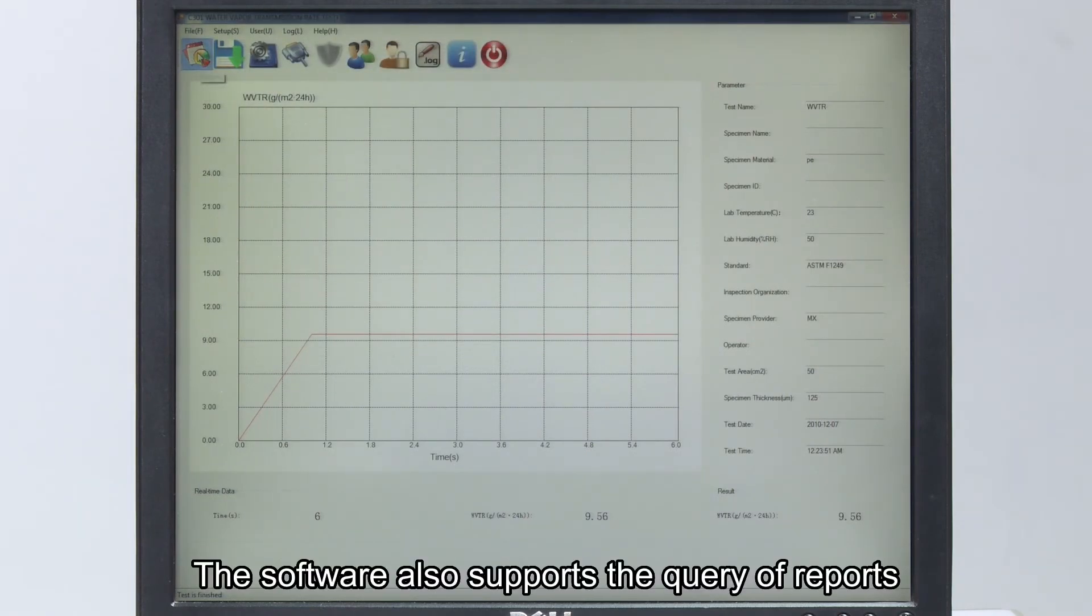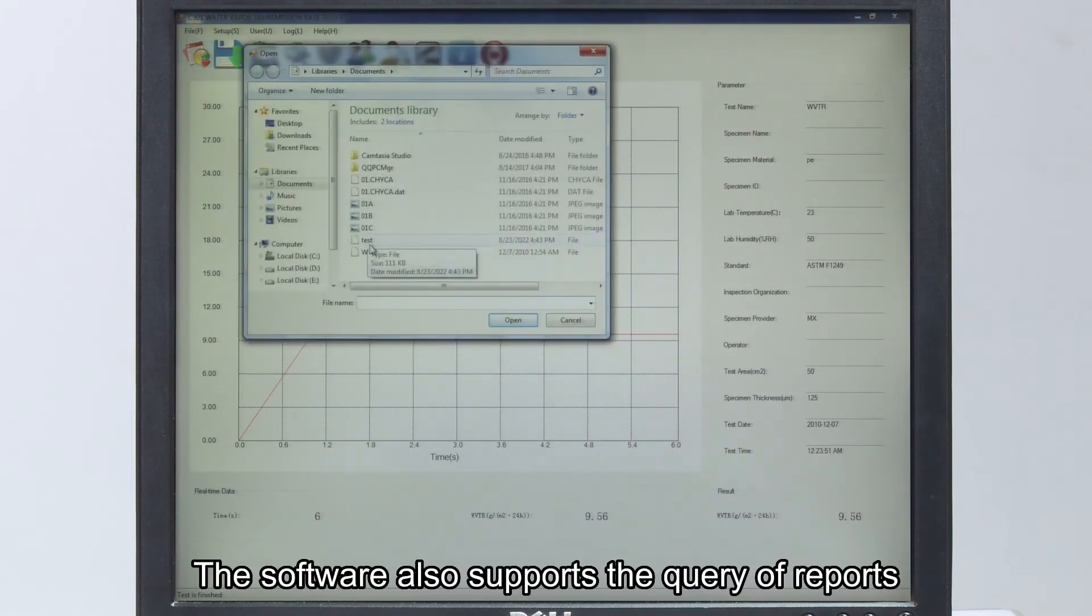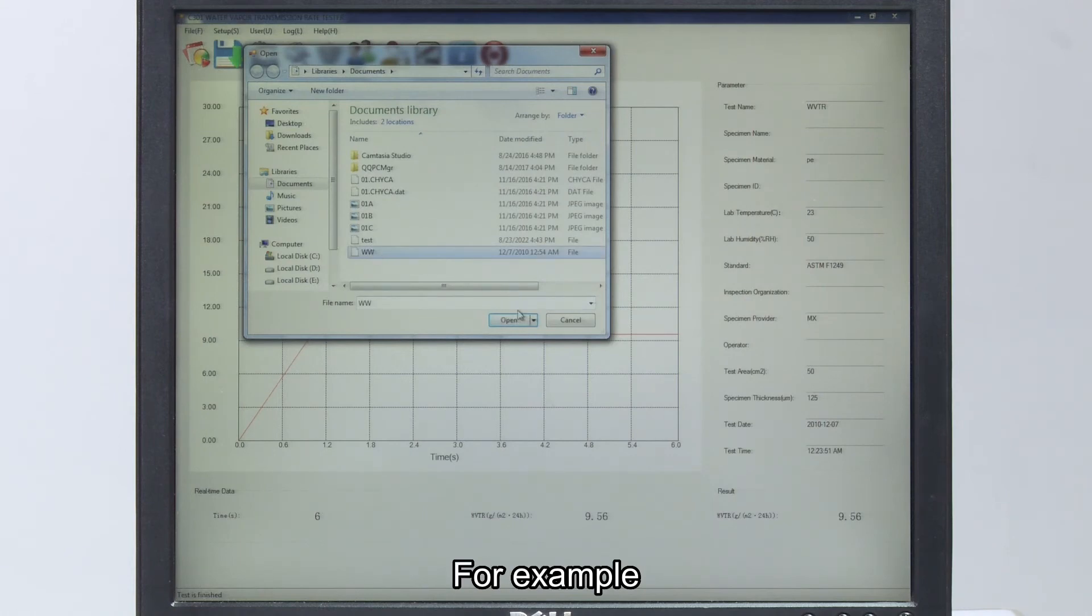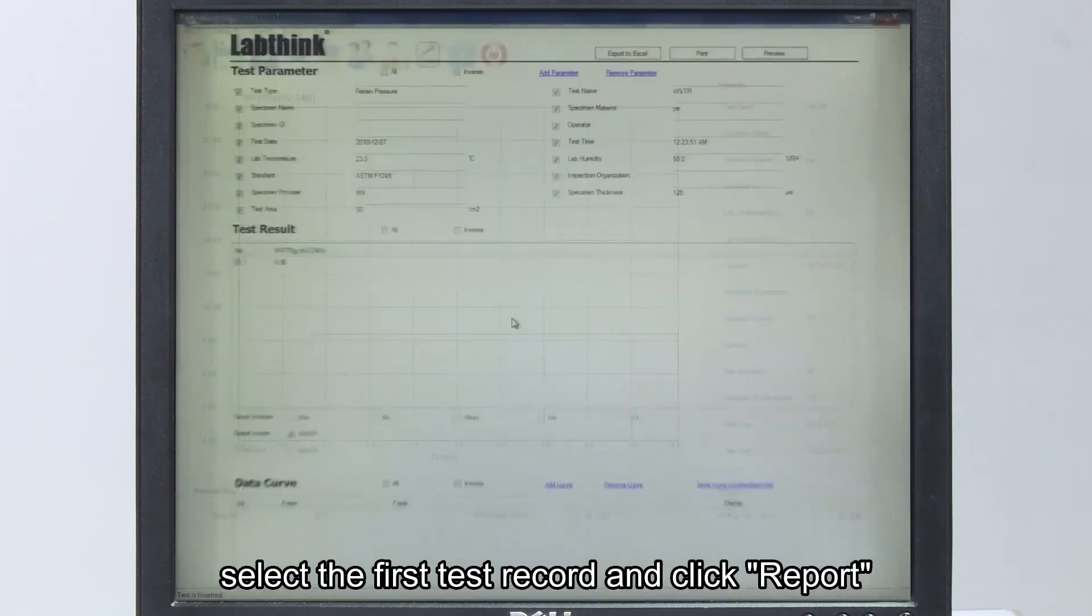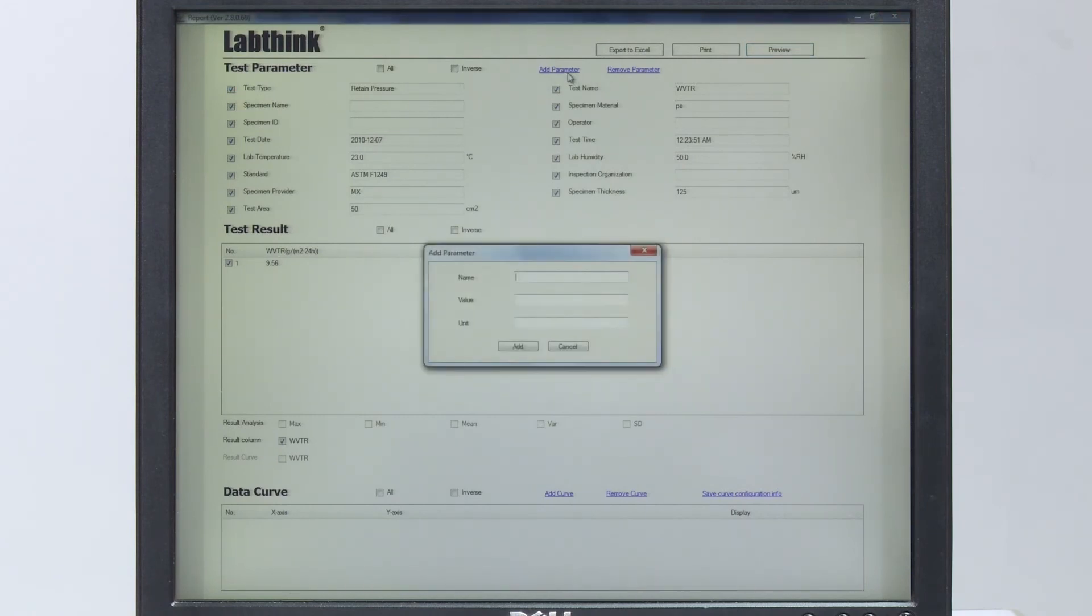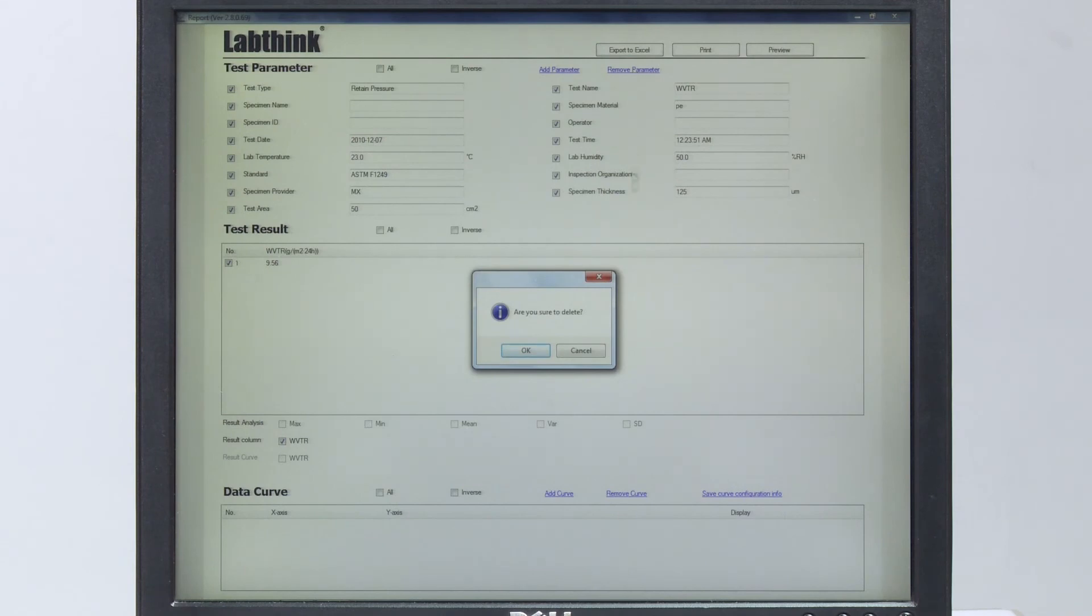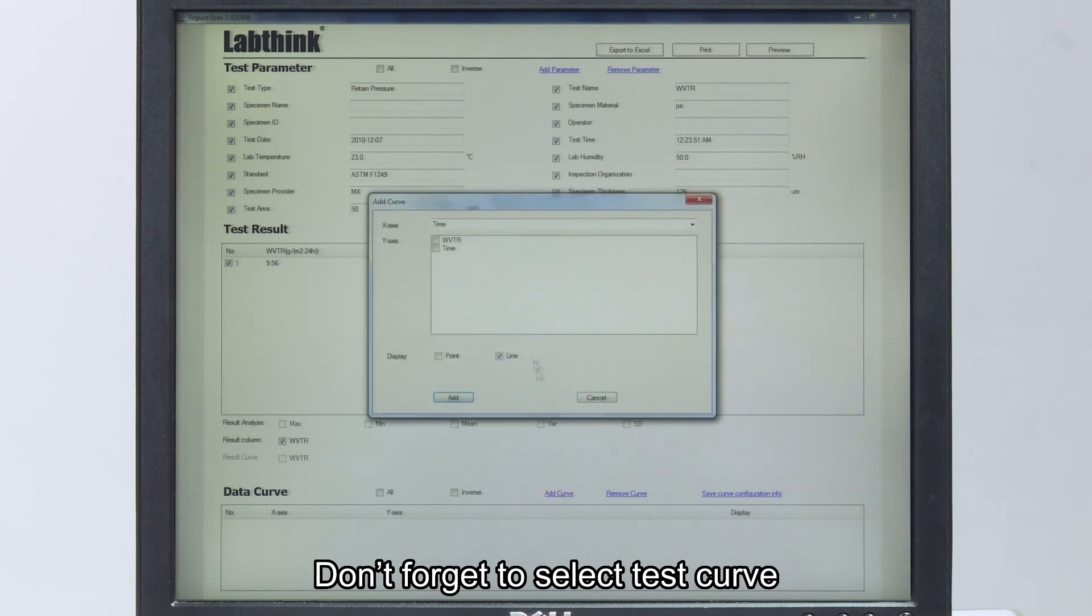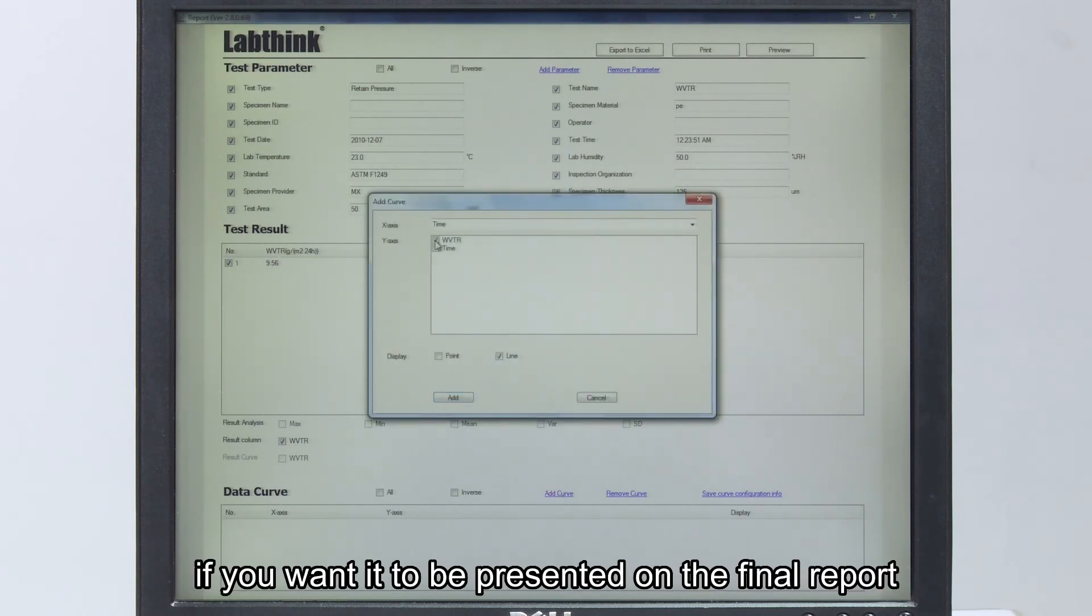The software also supports the query of reports. For example, select the first test record and click report. On the report interface, you may decide which parameters to be displayed on the report. Don't forget to select test curve if you want it to be presented on the final report.